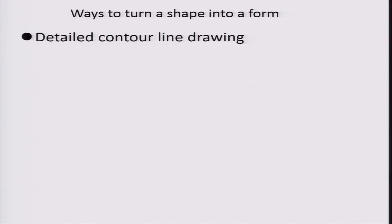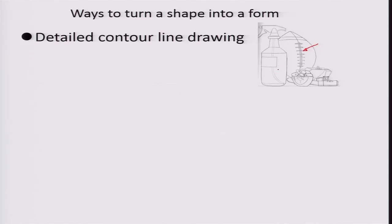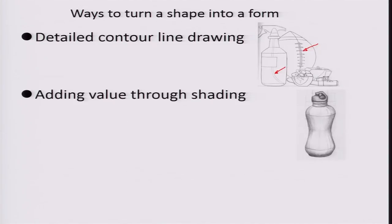When talking about different ways to turn a shape into a form, there can be detailed contour line drawing. A line gives an idea of the third dimension — certain contour lines convey a 3D perspective even when drawing on a 2D plane. Value can also be added through shading. These particular shaded areas create an aspect of 3D in an otherwise 2D plane object, which would otherwise have been just a shape.